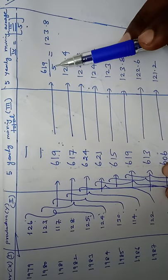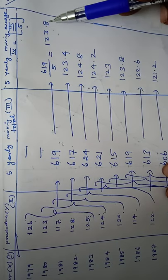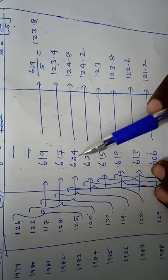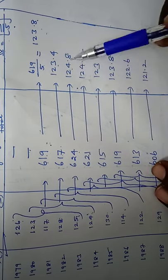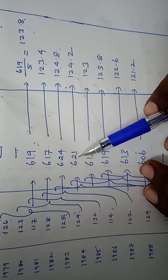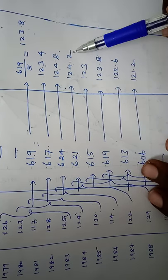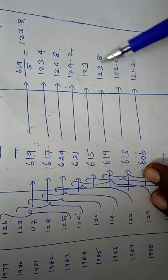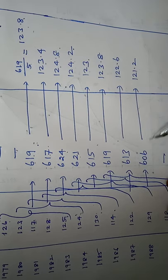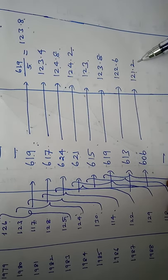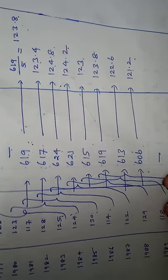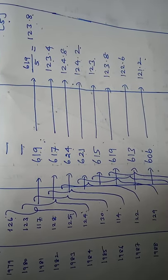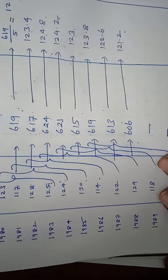So 619 ÷ 5 = 123.8, 617 ÷ 5 = 123.4, 624 ÷ 5 = 124.8, 621 ÷ 5 = 124.2, 615 ÷ 5 = 123. Continuing similarly, the final result is 606 ÷ 5 = 121.2. These are the 5-yearly moving averages for this column.